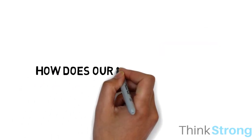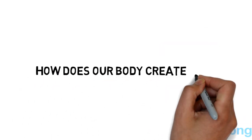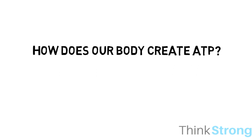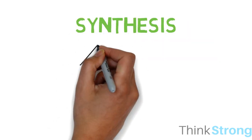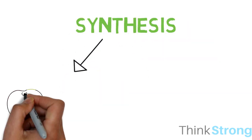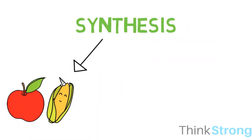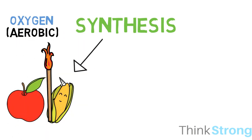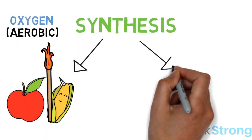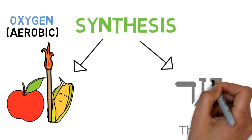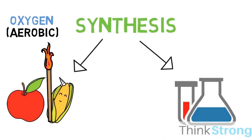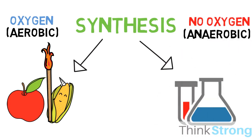How does our body create ATP? ATP synthesis can come from either your body burning nutrients when there is oxygen present, which is known as aerobic, or from chemical reactions when there is no oxygen present, which is called anaerobic.